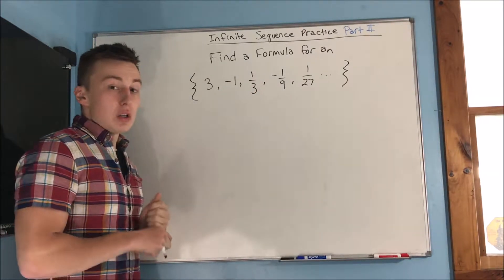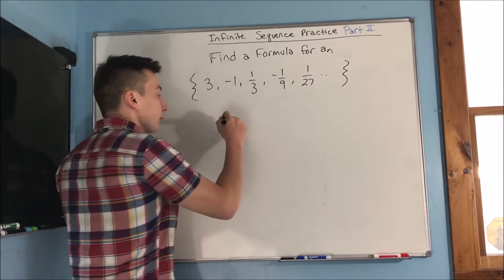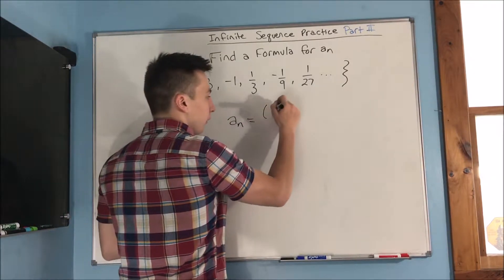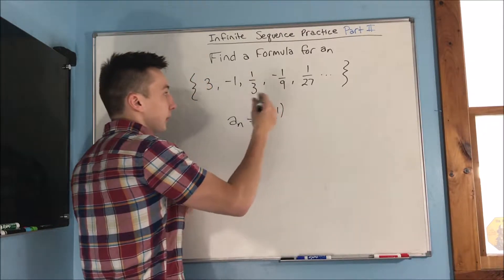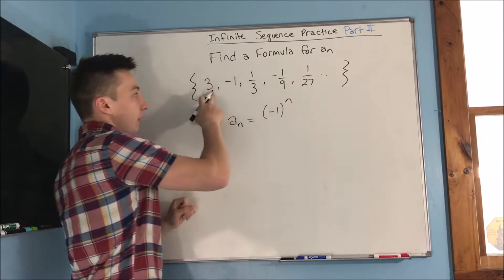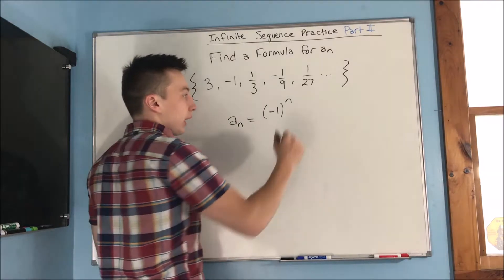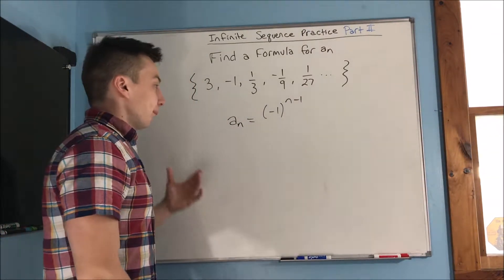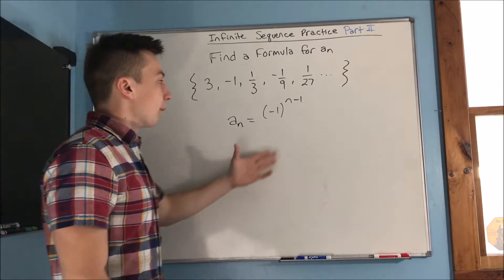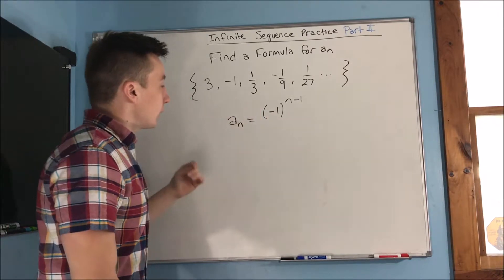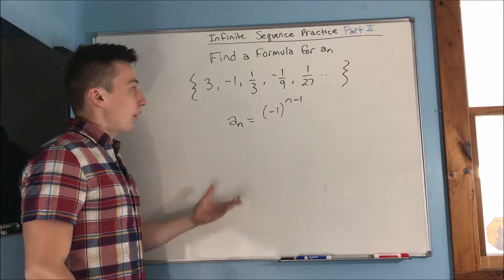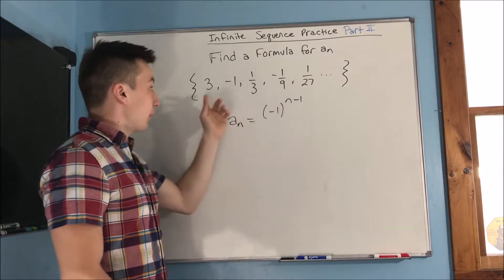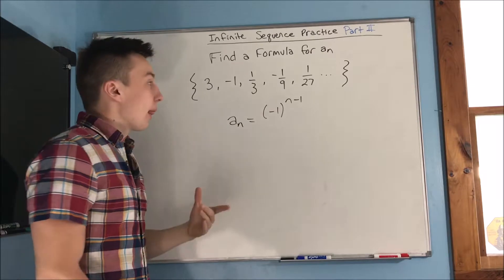So we know at least that a sub n is going to be a negative one times not n because that would be for the odd terms, but we're gonna have to do n minus one. You can do n plus one whatever you want. So that's cool. Now what about, is there anything else we need to include for the numerator? It really doesn't look like it because it's just one every time after this first three right here.